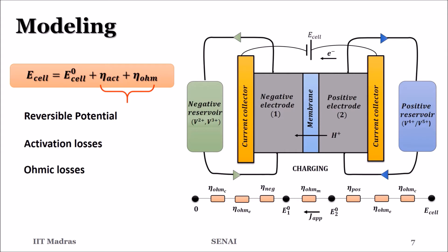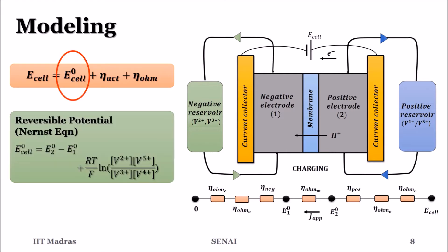Hence, the charging potential is found as the sum of these three. Reversible potential is the theoretical limit and is the difference between the positive and the negative electrode potentials. Its dependence on the electrolyte concentration is given by the Nernst equation.